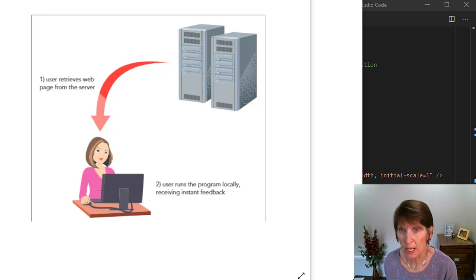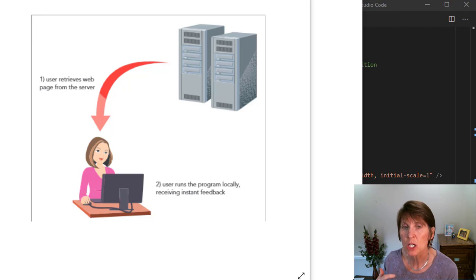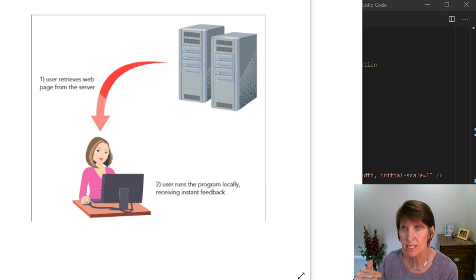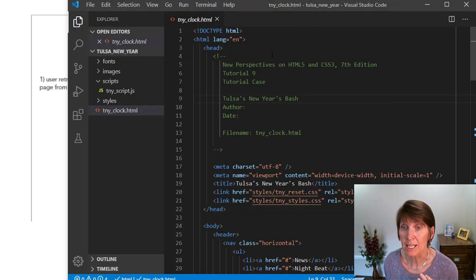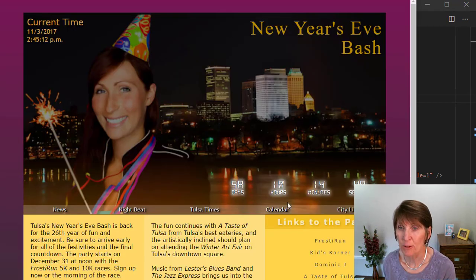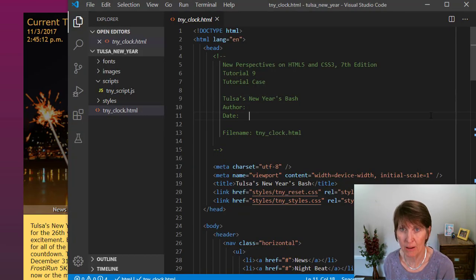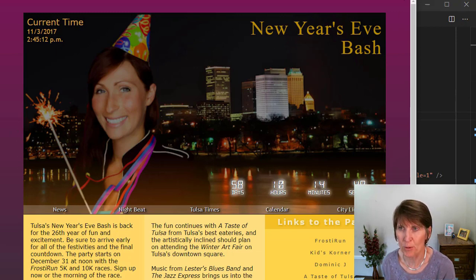JavaScript is an interpreted language, which means execution happens as it moves through the lines — it doesn't need a compiler and doesn't have to be pre-compiled. In an interpreted language, each line is translated and executed, then it moves on to the next line. So we won't need a compiler; we will need a plain text editor and a browser, and those are tools we've already been using, so nothing new to code in JavaScript.